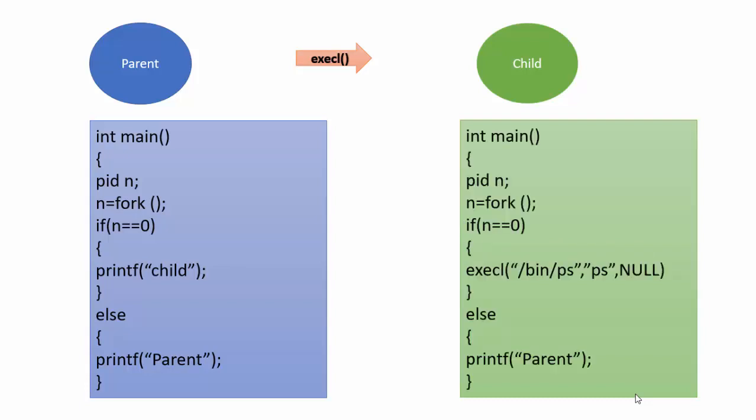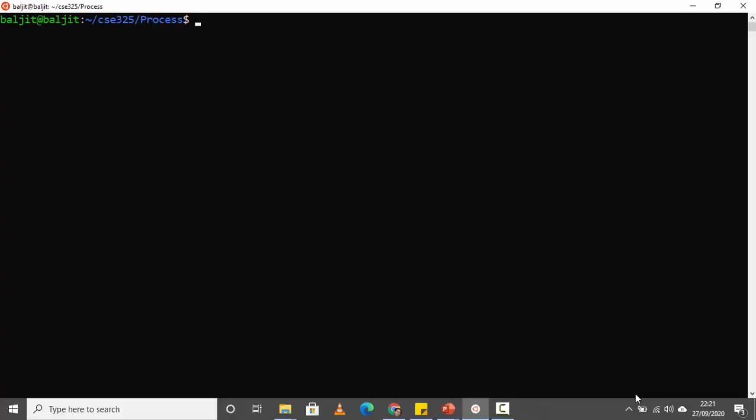Let's do it with an example. Before using execl, we have a simple code where we use fork to create a child process. The child is printing 'I am child having id something', and the parent is first waiting for the child to finish and then printing its own PID.